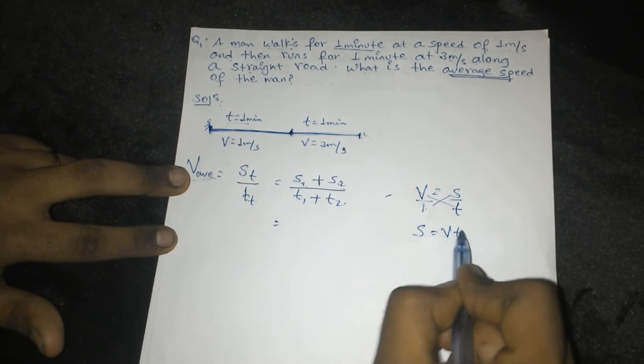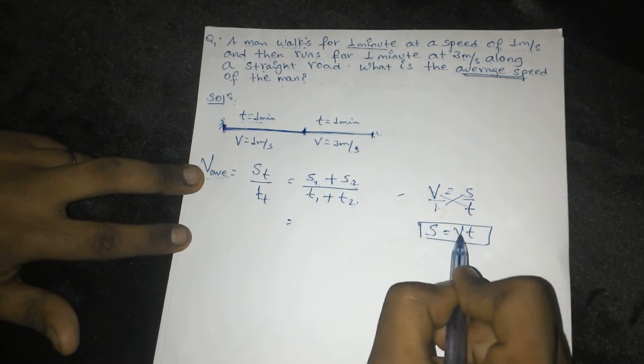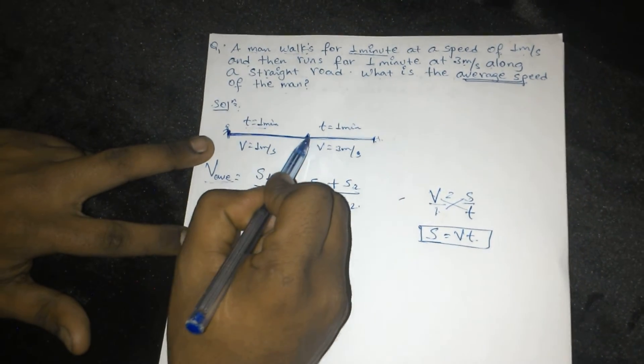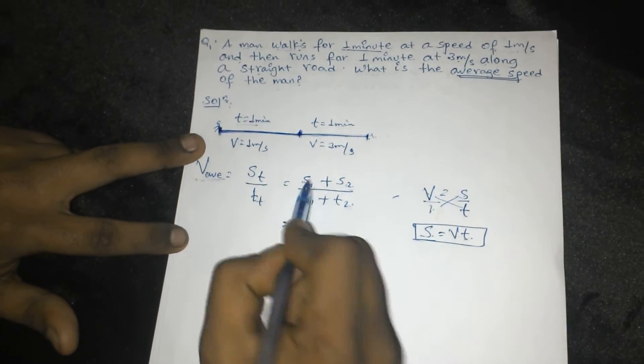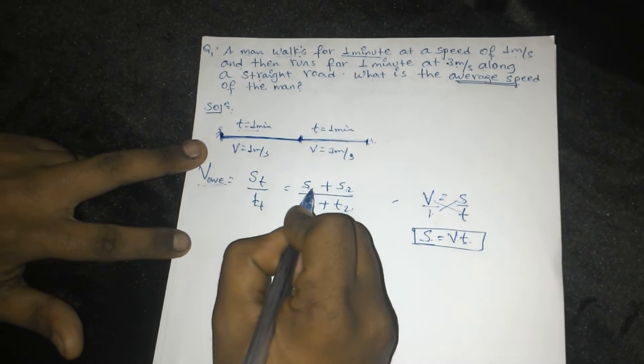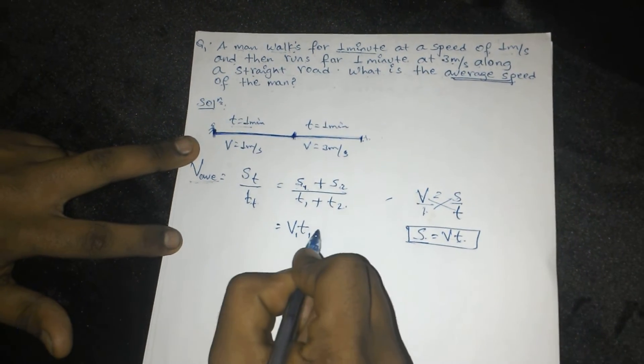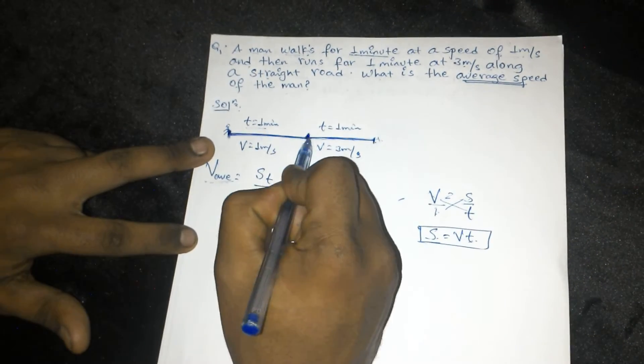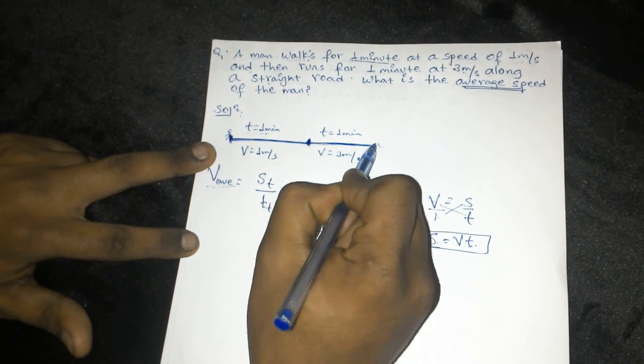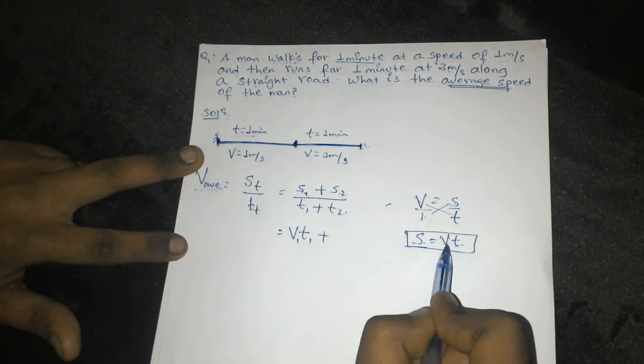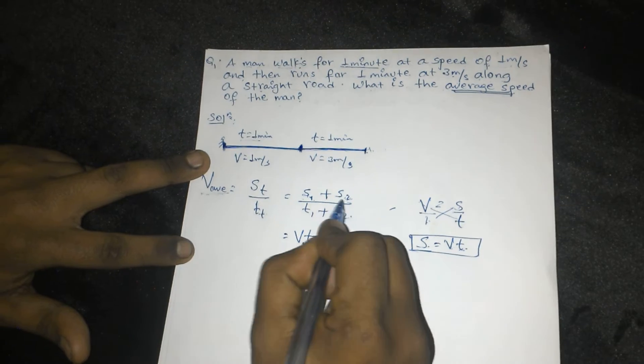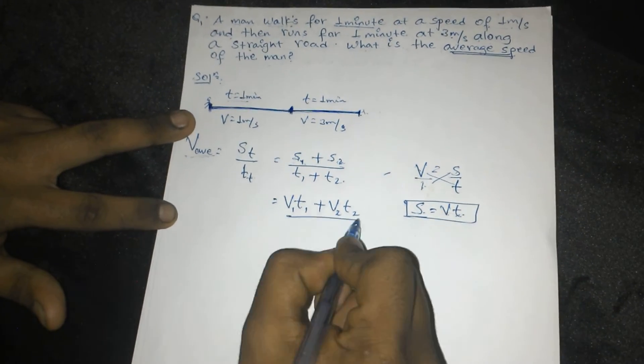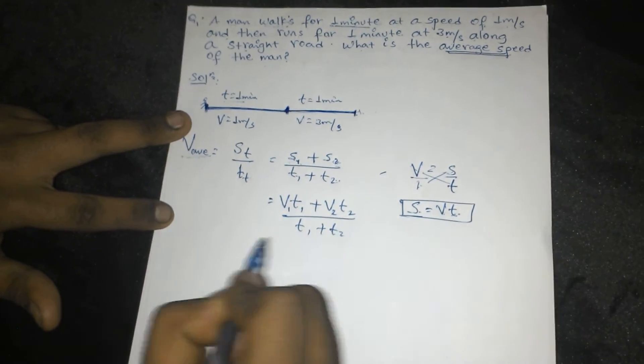Speed times time gives distance, so to get the distance, S1 equals V1 times T1 plus S2 equals V2 times T2, then divided by T1 plus T2.